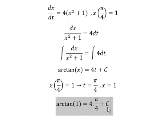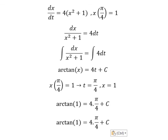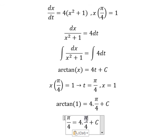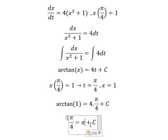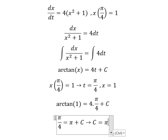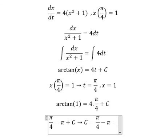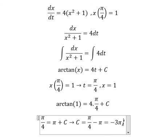So arctan of 1, we have π over 4. This one gives us π. So we can find C in here. That's π over 4 minus π, and we have negative 3π over 4.